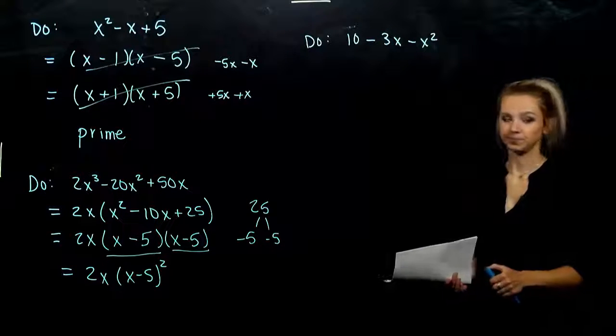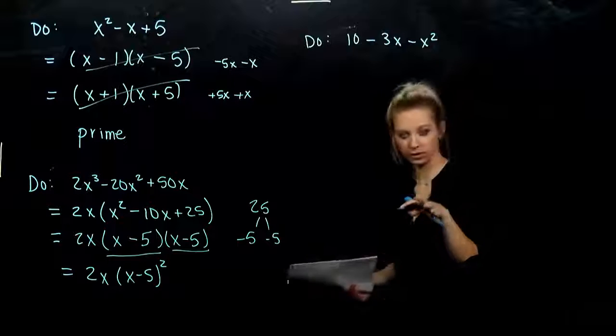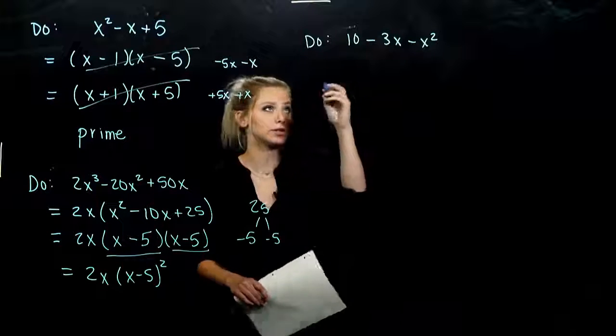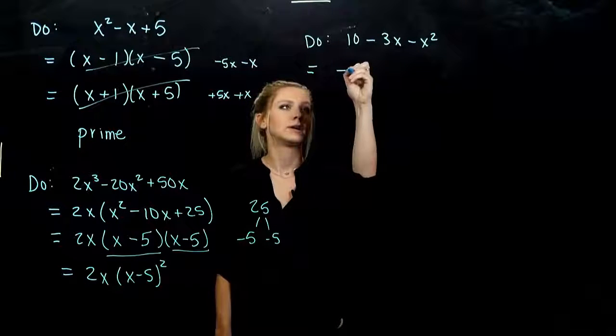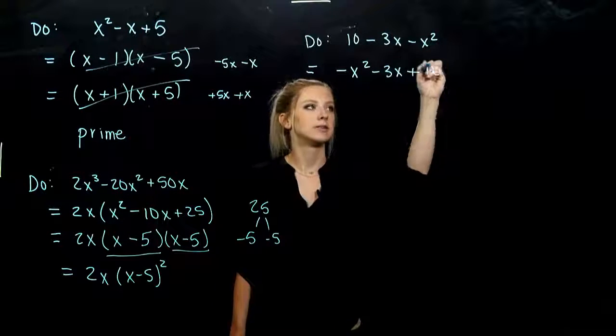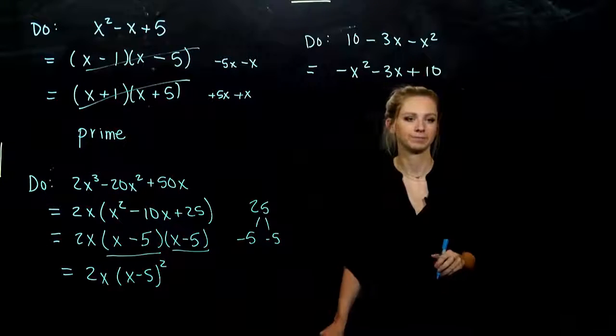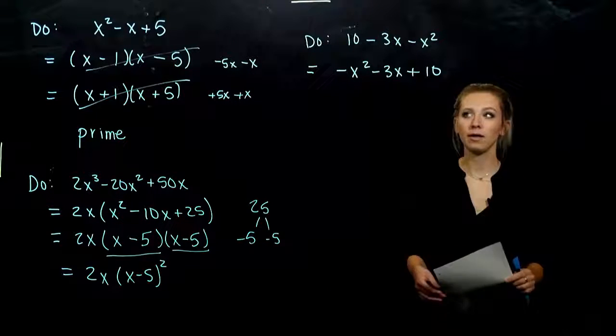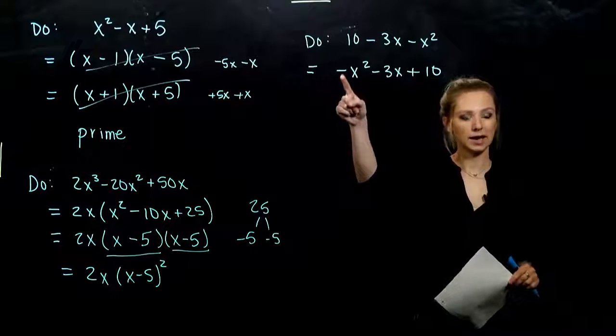So factor it as far as we can go. Let's look at the next one. I don't like that order. Hopefully you don't as well. First thing that we should do is turn it around. I want it to be in descending order. Highest power first, decreasing as we go down.